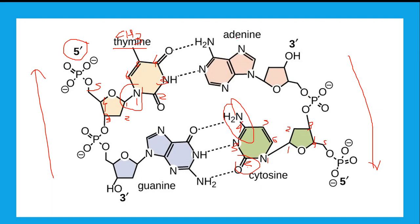For purines, carbon numbers are one, two, three, four, five, and for the second ring seven, eight, nine. The ninth carbon is attached to the ribose sugar. For adenine: nine, eight, seven, and six, five, four, three, two, one. For guanine, the ninth carbon is similarly attached. The ninth carbon of both adenine and guanine is attached with the first carbon of the ribose sugar.